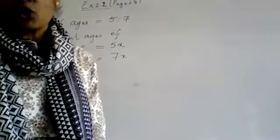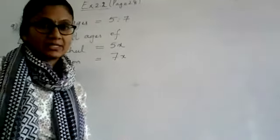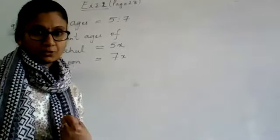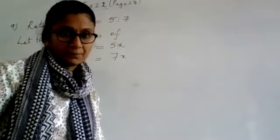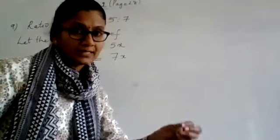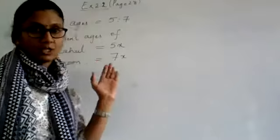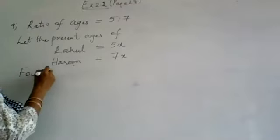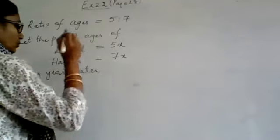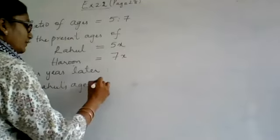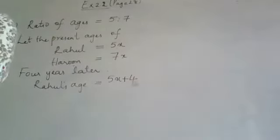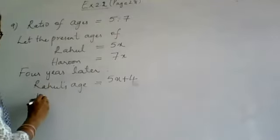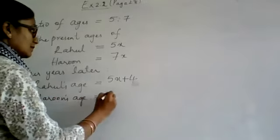Now going on to the second condition: 4 years later. Four years later means their ages will increase. For example if you are 12 years old now, after 4 years you will be 12 plus 4 which is 16 years. The same case holds here. So if their present ages are 5x and 7x, four years later Rahul's age will be 5x plus 4. Similarly if Haroon is 7x now, his age after 4 years will be 7x plus 4.